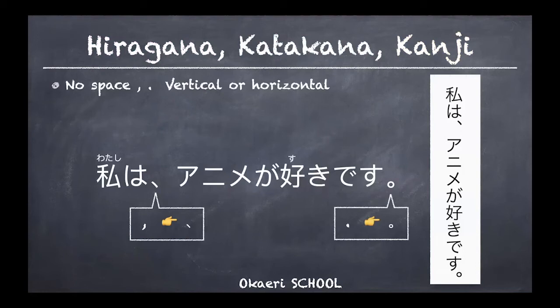Having hiragana, katakana, and kanji all mixed together helps you find where words begin and end — identifying verbs, nouns, names, and so on, instead of spaces. Commas in Japanese look mirrored compared to English commas, and the period is written as a tiny little circle. Modern Japanese is written horizontally, but as shown with the white background example, you can also write vertically — used in newspapers, magazines, novels, official documents, and manga.